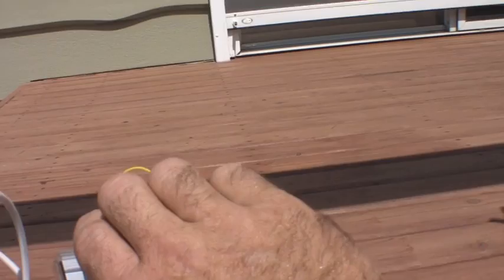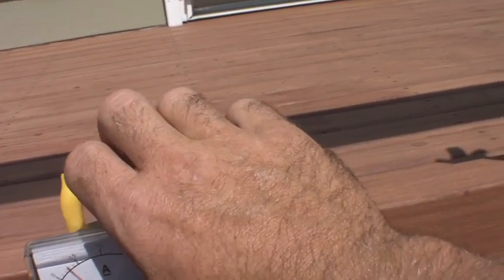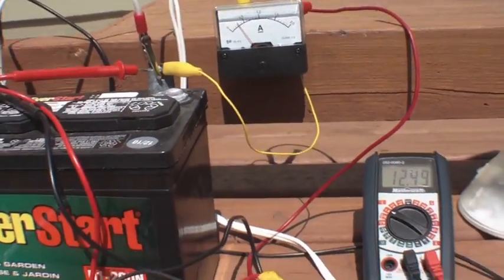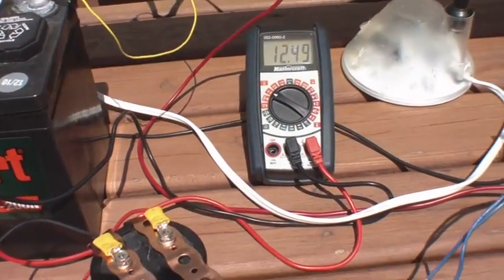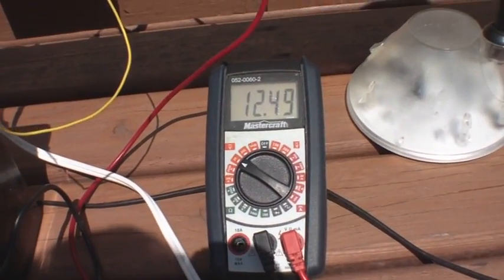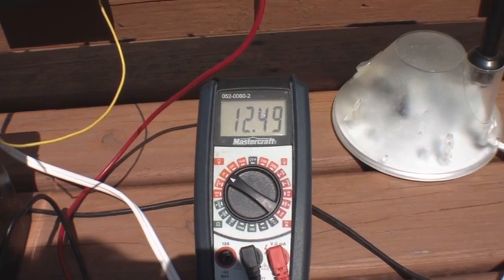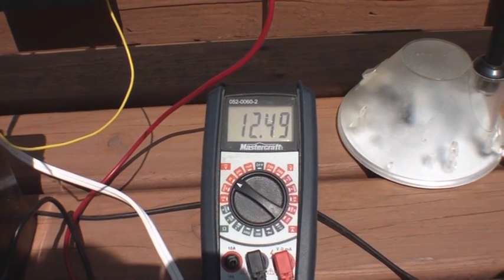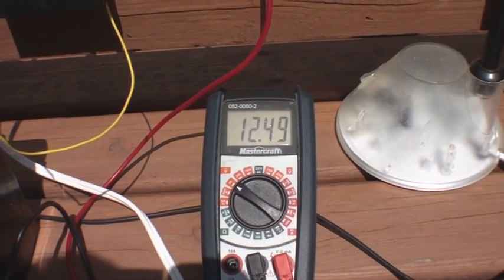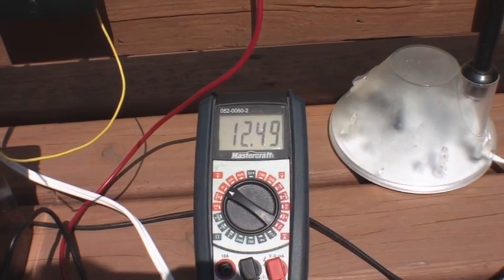I'm getting set up here. Okay, so now we're fired up again. Remember that this battery was running this load at about 12.44. Now it's running it at about 12.49 volts.